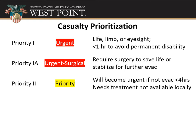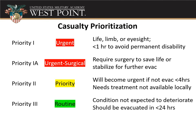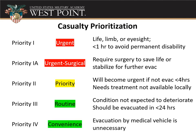Priority level two is called priority, and these are conditions that will turn into urgent if not evacuated in less than four hours — they need treatment not available locally in order to stabilize them. Third is routine: conditions not expected to deteriorate further, and patients should be evacuated in under 24 hours. Priority four is convenience, where evacuation by a medical vehicle is unnecessary but would be done at the convenience of the medical unit if possible.